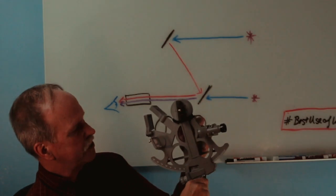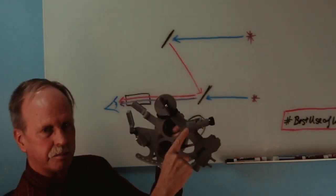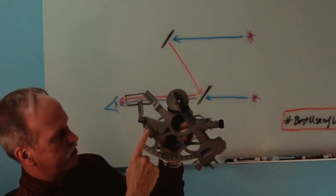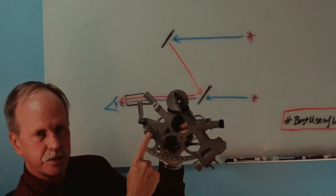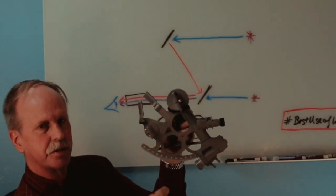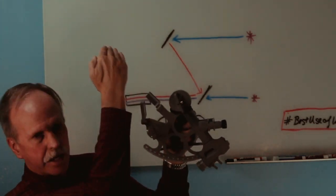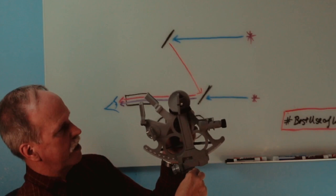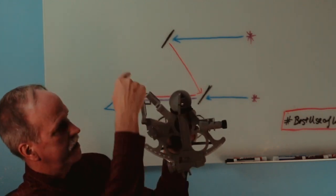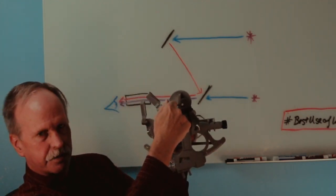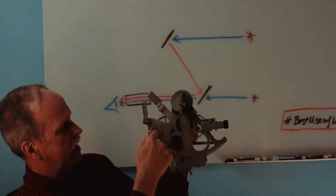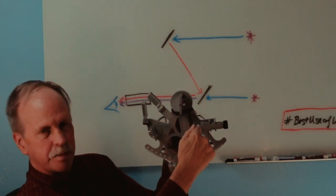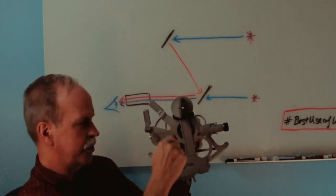Now, here's the way a sextant works. This mirror is attached to the body of the sextant. This is called the arch. This is the body of the sextant. This mirror is attached to an armature that can move. And as you can see, you just move it like that. Now, what happens with this?